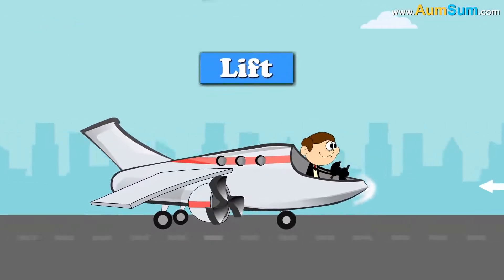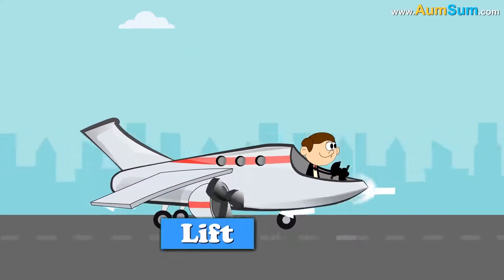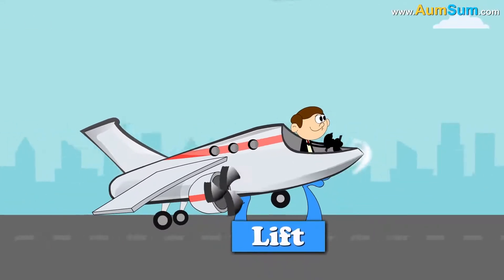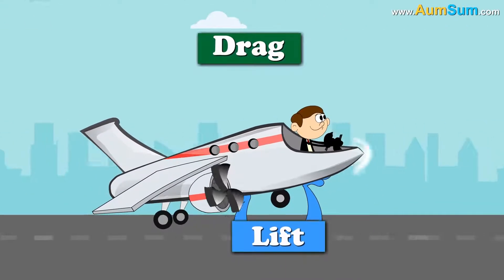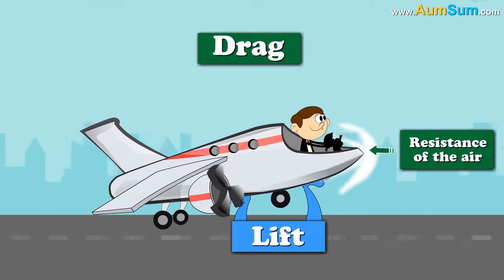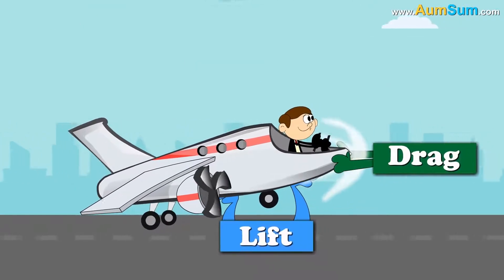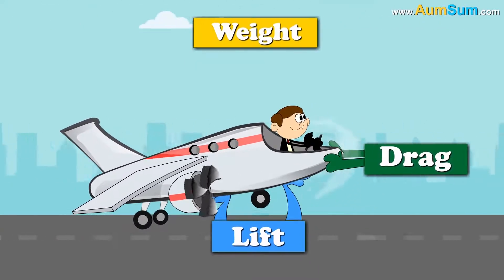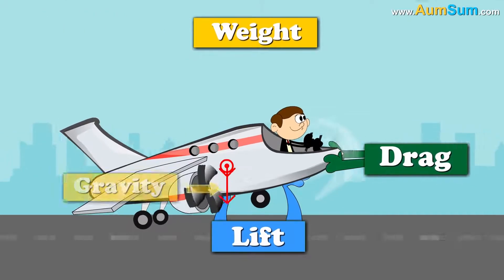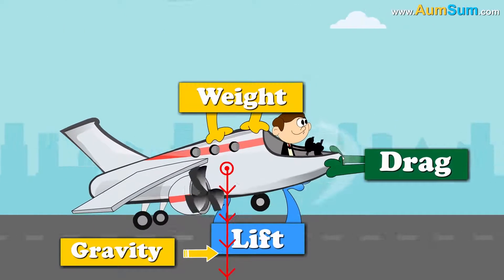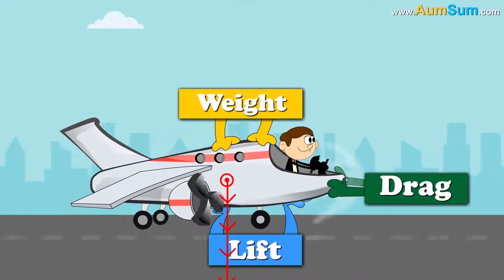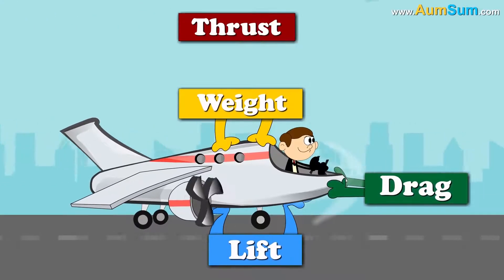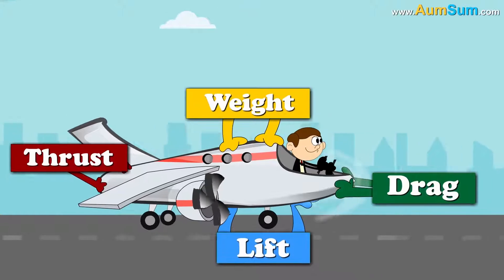Lift. This force is generated because of the forward motion of the airplane through the air. Drag. This force is generated because of the resistance of the air to the forward motion of the airplane. Weight. This force is generated because of the pull of gravity towards the center of the earth. And finally, thrust. This force is generated by the engines of the airplane.